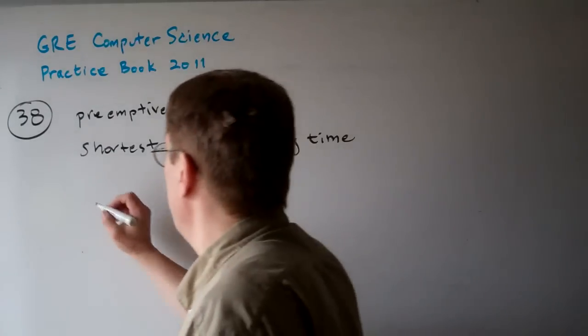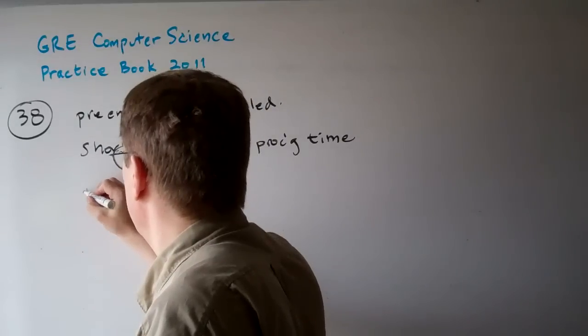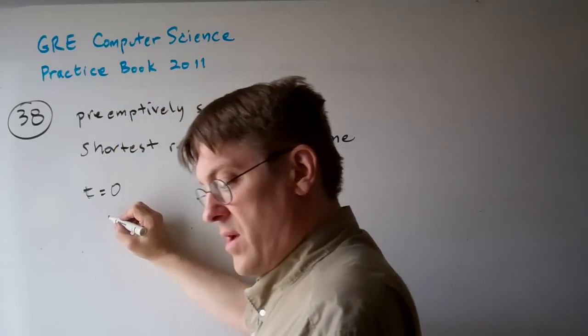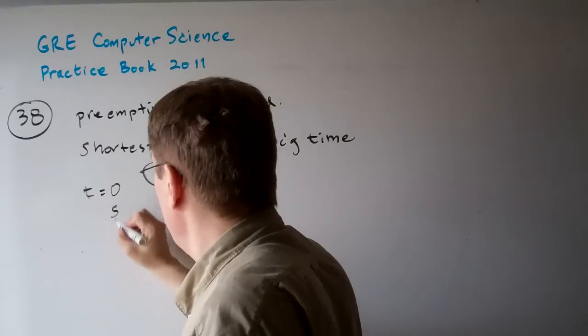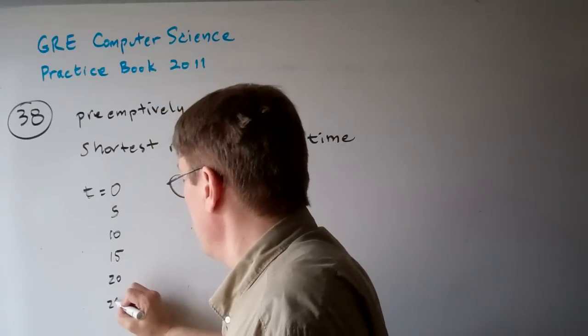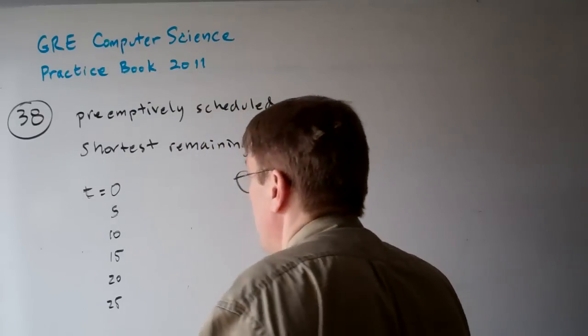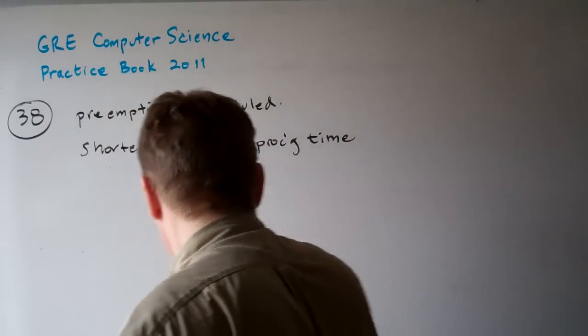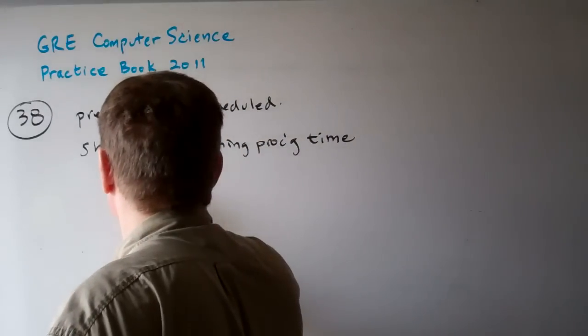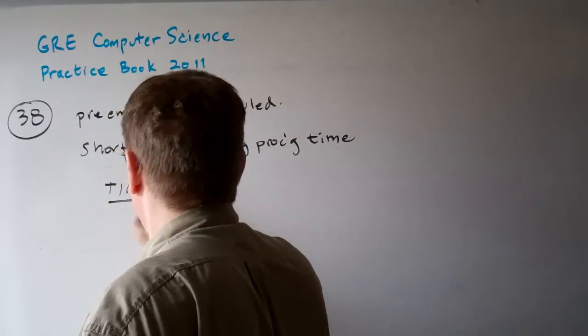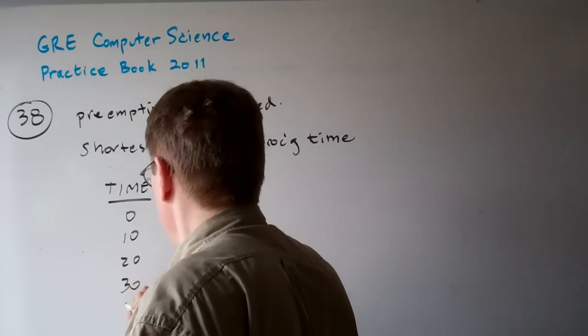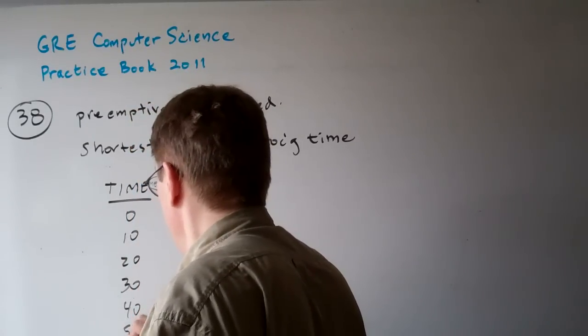Let's suppose we have time t equals 0, and we have let's say 5, 10, 15, 20, 25. I don't know, what the hell with that? I'm going to do this a little bit easier. Time: 0, 10, 20, 30, 40, 50.